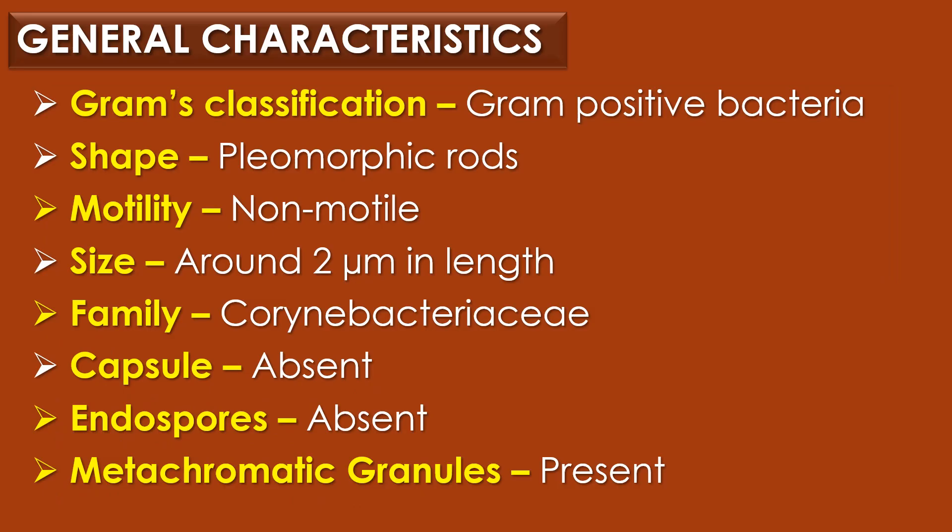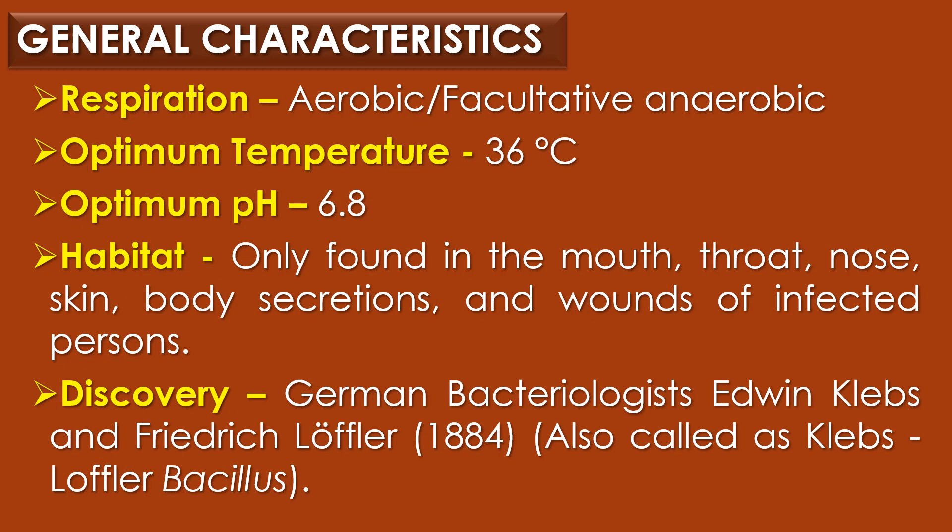First, general characteristics of Corynebacterium diphtheriae. Corynebacterium diphtheriae is a gram-positive pleomorphic rod and it is non-motile in nature. Its size is around 2 micrometers in length and it belongs to the family Corynebacteriaceae. Capsules are absent, endospores are absent, and metachromatic granules are present.